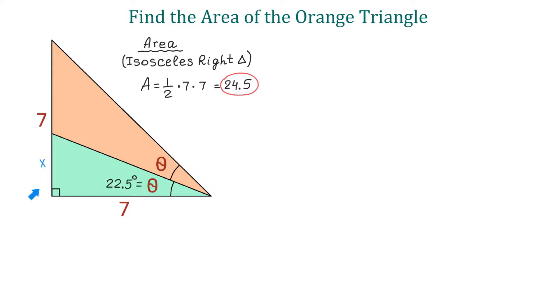And now, to find x, we will use the tangent function. We will write that tangent of 22.5 degrees equals the opposite side x divided by the adjacent side 7. To solve for x, we will multiply both sides by 7.